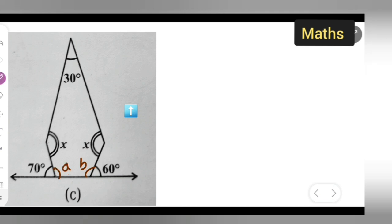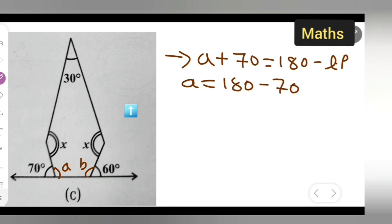Let us find the linear pairs first. So a plus 70 equals 180. This is a linear pair, so a equals 180 minus 70, which gives you a equals 110 degrees. Next, let us find b.